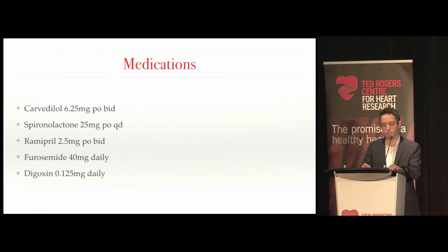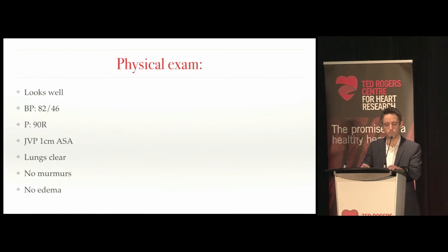Her medications are pretty typical for a heart failure with reduced ejection fraction patient. She was on triple therapy with carvedilol 6.25 milligrams twice daily, spironolactone 25 milligrams daily, and ramipril 2.5 milligrams twice a day. She was on furosemide 40 milligrams a day, and she was also started on digoxin 0.125 milligrams daily. Her physical exam was pretty typical, with a blood pressure a little soft at 82 over 46, a heart rate of 90 and regular. She appeared compensated without any obvious evidence of congestion, and there were no murmurs or edema noted.